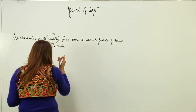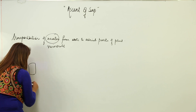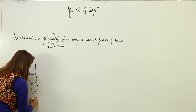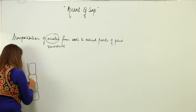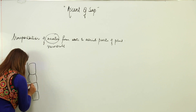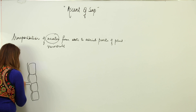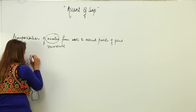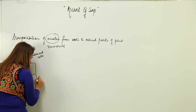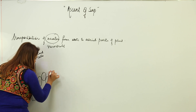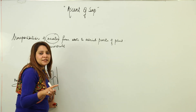If we look at the structure of the root, it consists of an epidermis — these are epidermal cells. They have a thin layer of cuticle. Then we have a five-layered cortex consisting of irregularly shaped cells, and along with that we have a xylem vessel.